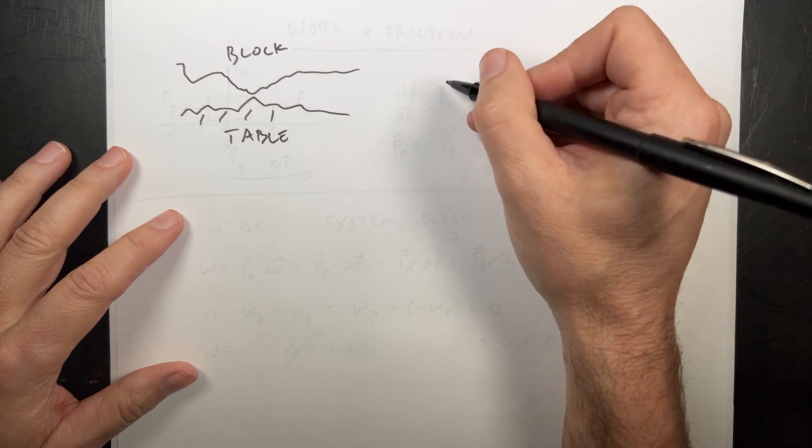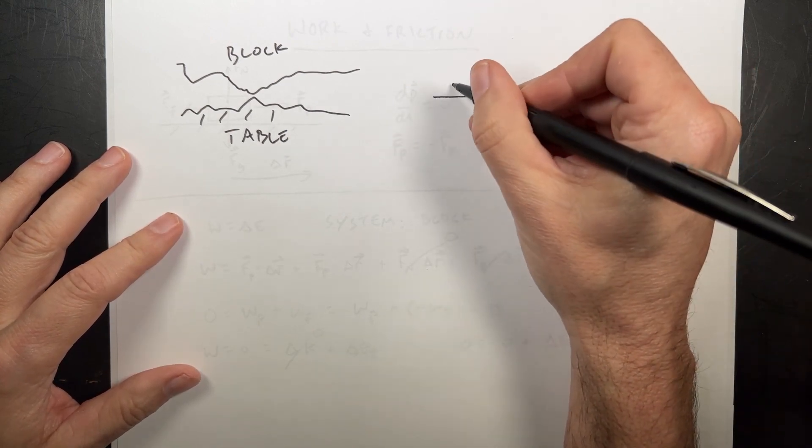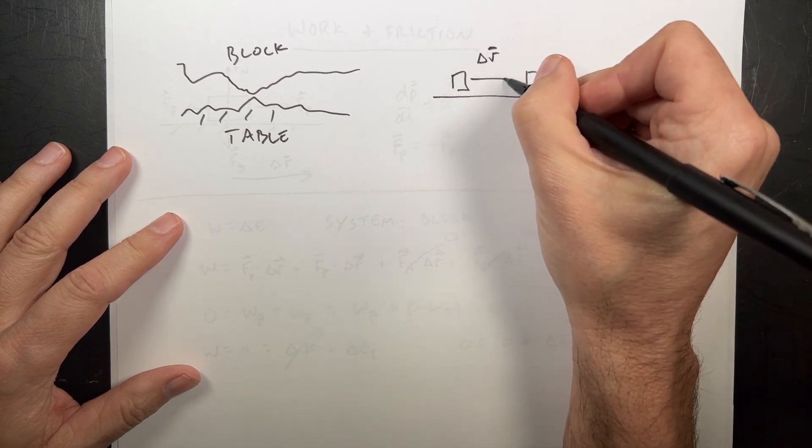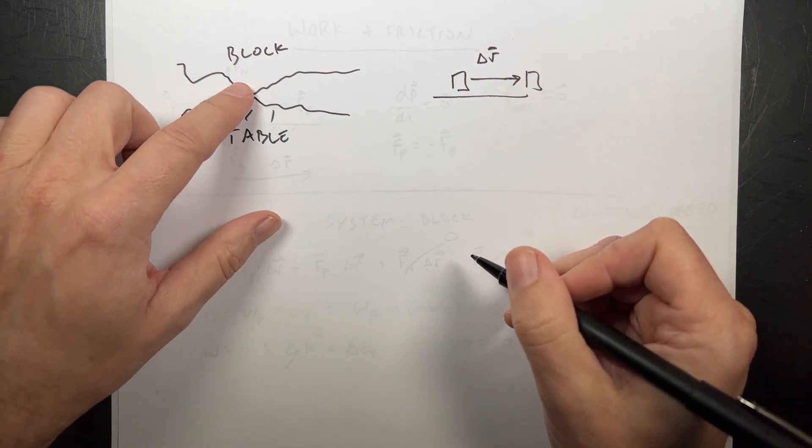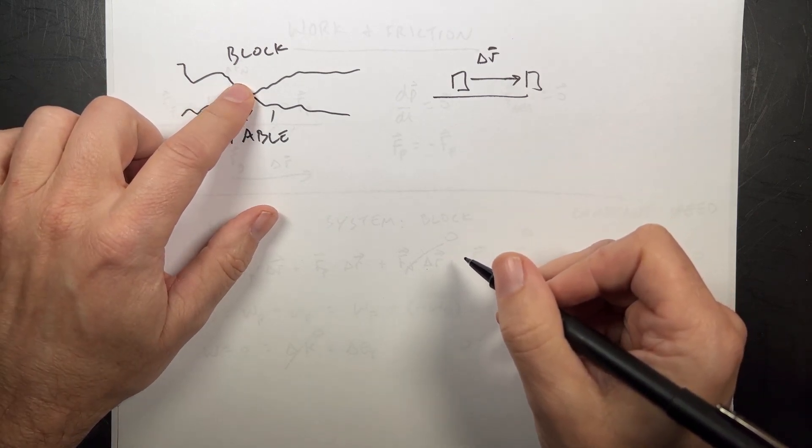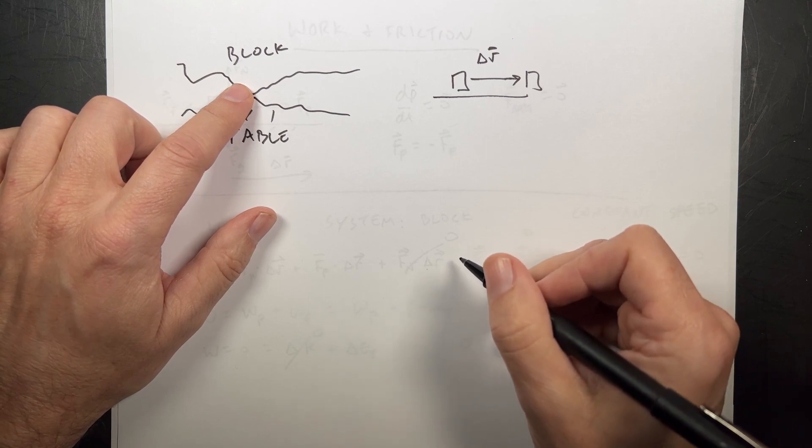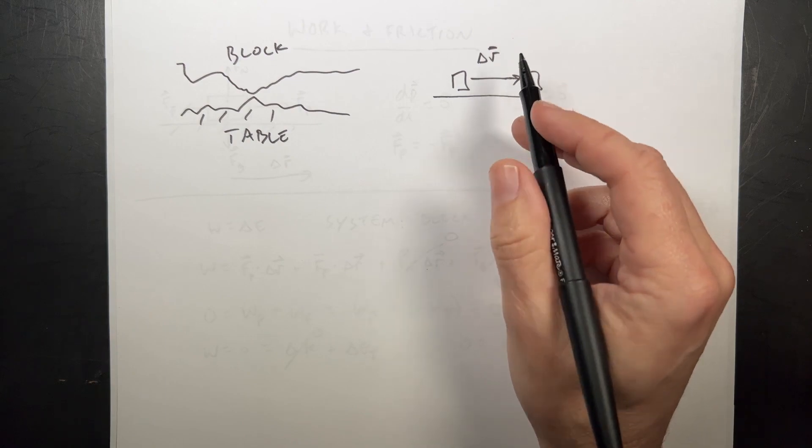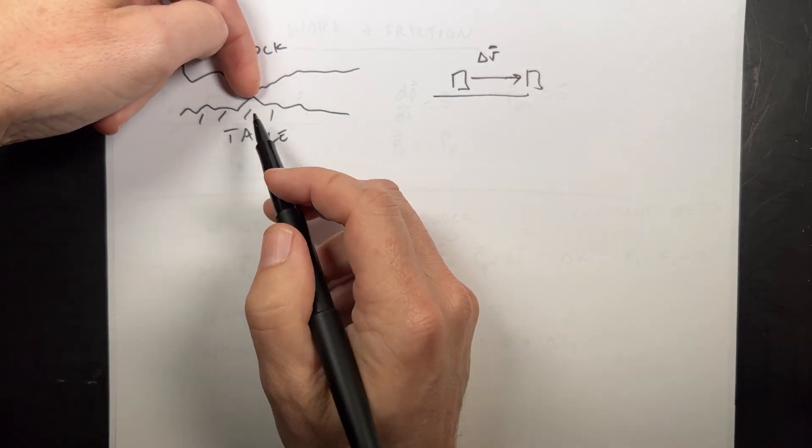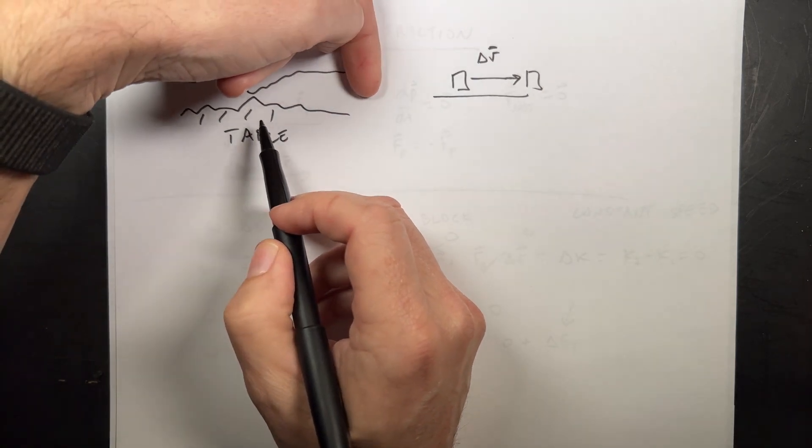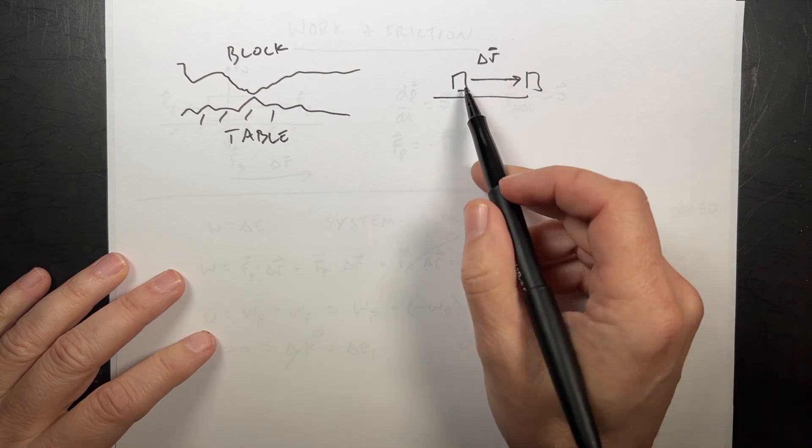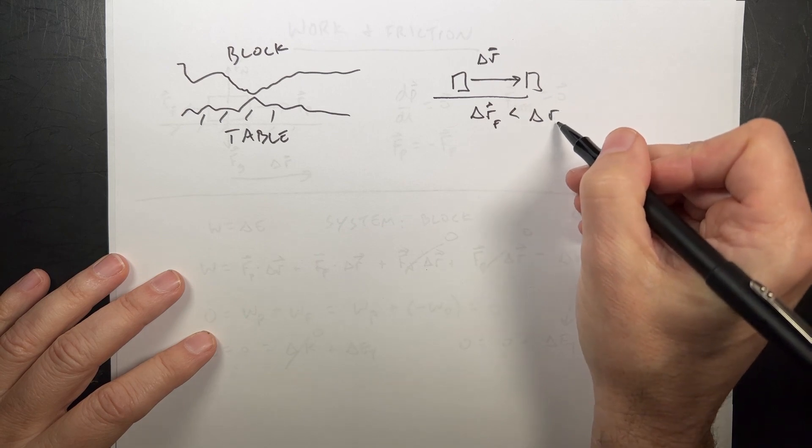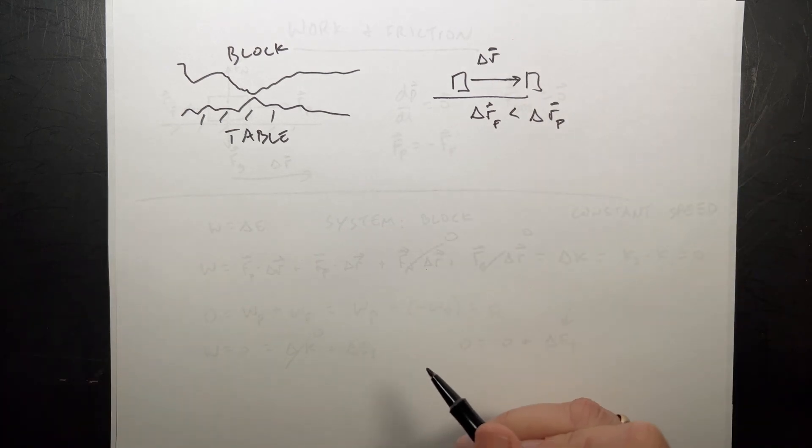And the important thing, and this is kind of confusing, but it has to be true, if I move this block from here to there, and we'll call that delta R. The work done by friction is not delta R. The work done by friction has to actually be less than delta R. Because I still want work done to be positive so this increases in energy. What can happen is if you imagine the block moving and then dragging part of this and then skipping ahead and then skipping ahead and skipping ahead. And so that would mean that delta R friction is less than delta R push. And that would fix the problem.